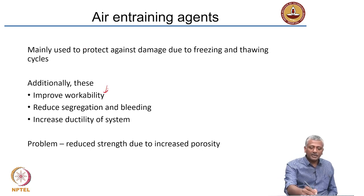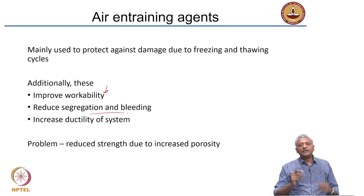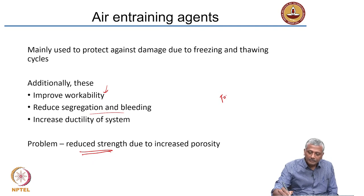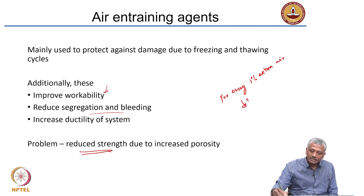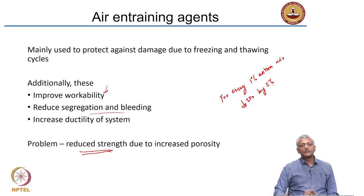Air entraining agents can also improve workability, reduce segregation and bleeding, and increase ductility. But remember, we are introducing air inside the concrete — more air brings down the strength. For every 1 percent extra air inside concrete, the strength comes down by 5 percent. So we need to be careful while using air entrainers.